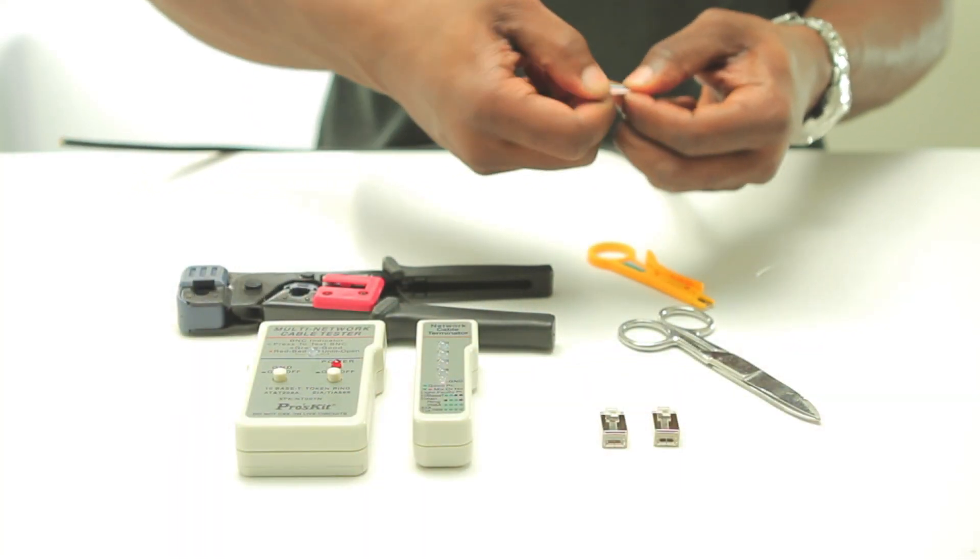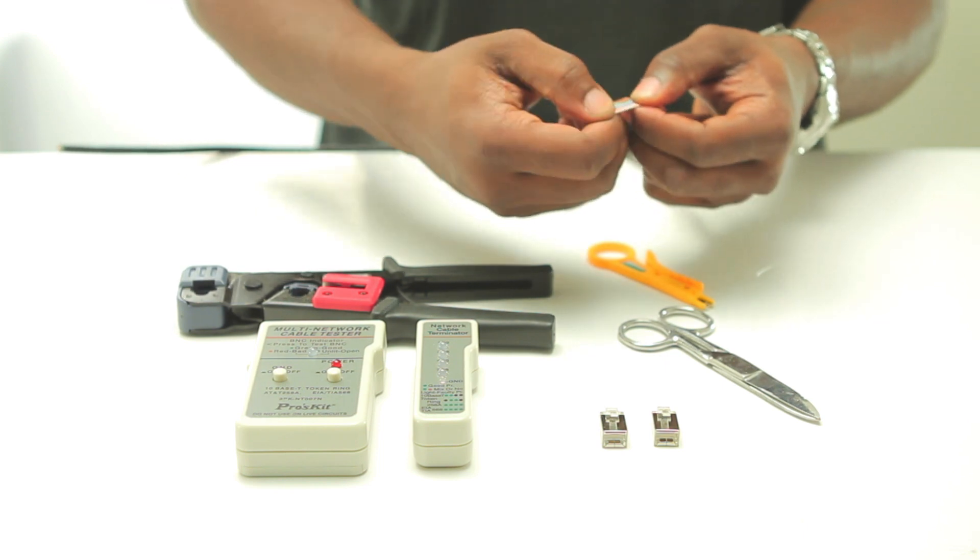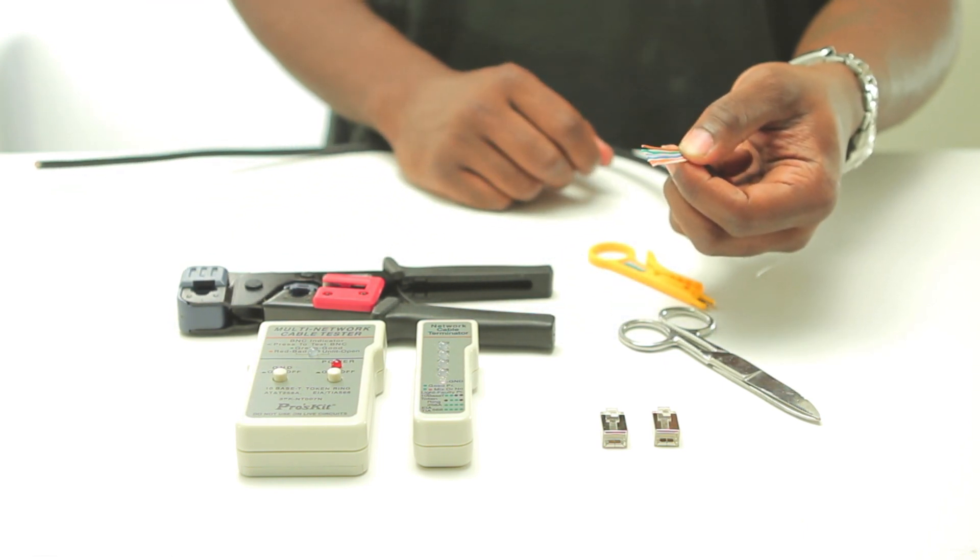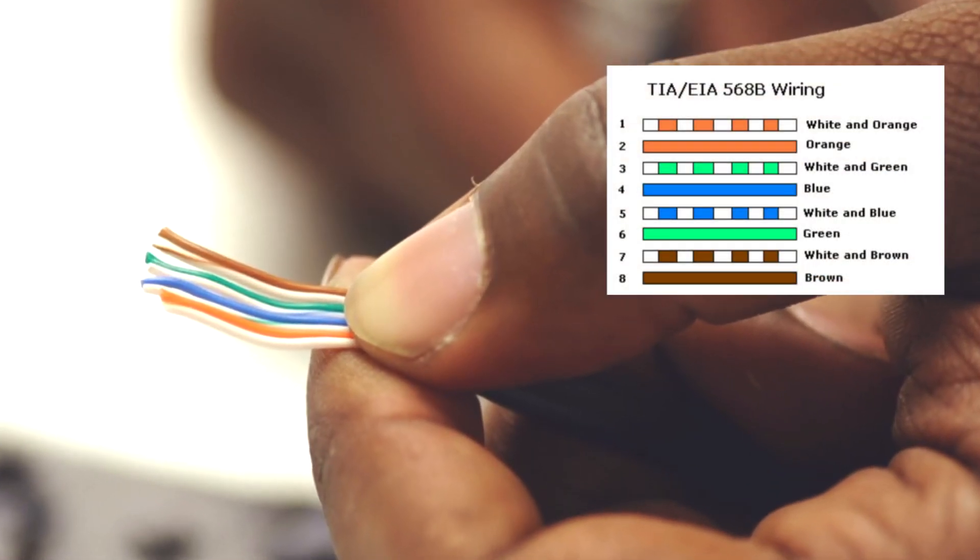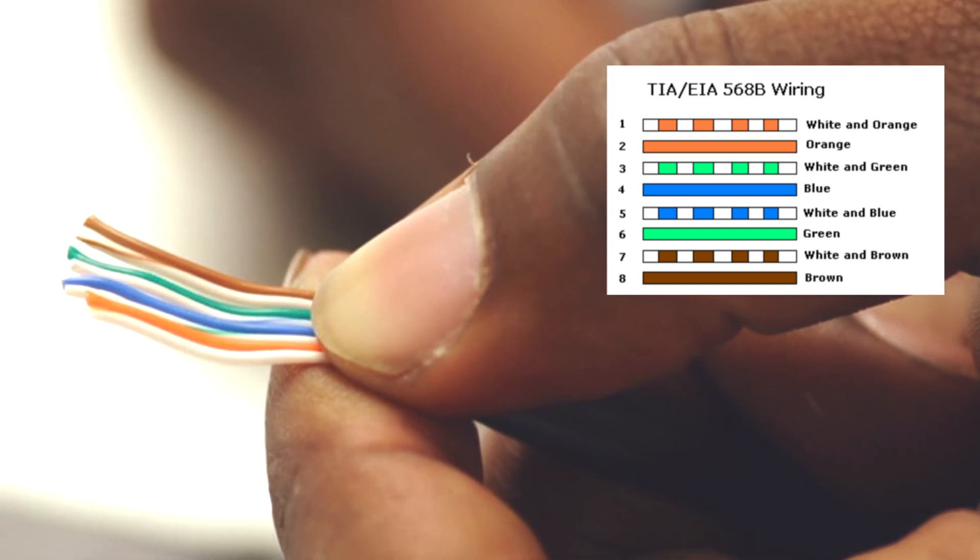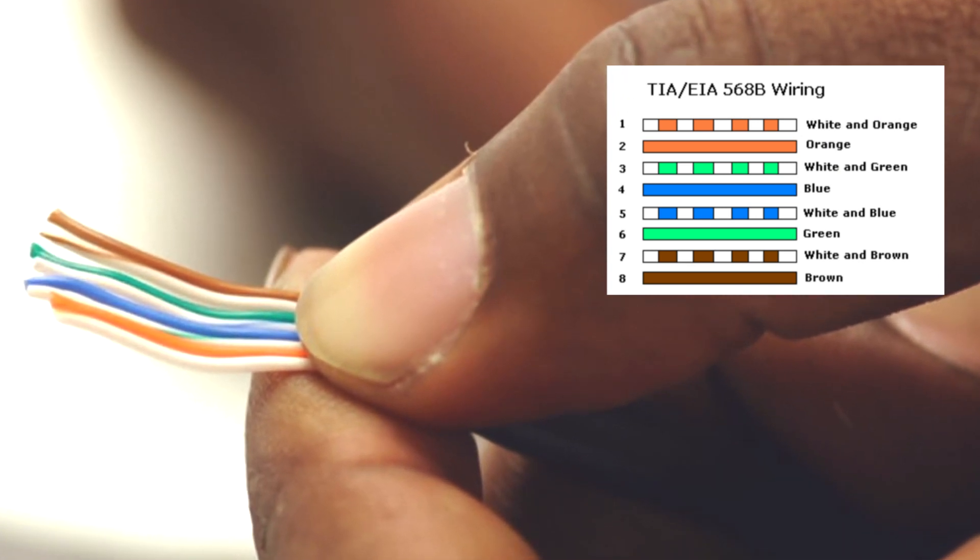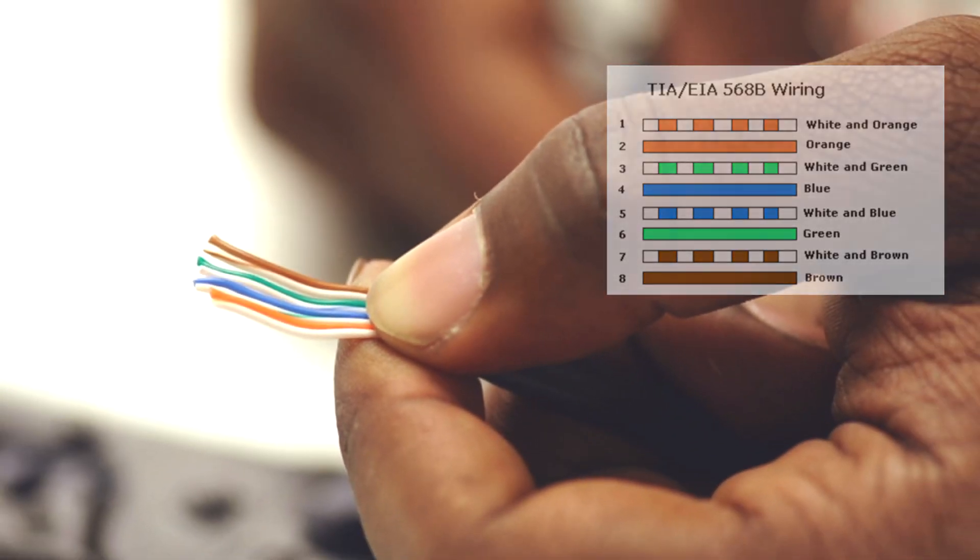Begin to straighten them out with your hands and line them up to the appropriate color code. The color code dictates the order of the wires. For most standard straight through applications use the 568B color code.